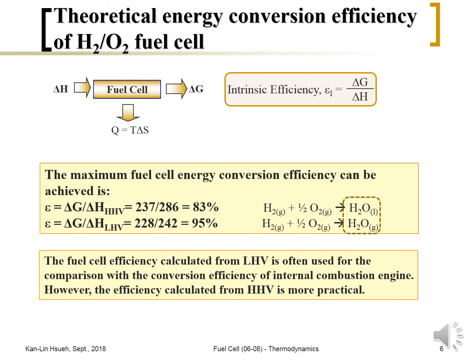However, these figures are only from the ideal thermodynamic point of view. In reality, the energy conversion efficiency is much lower. For a practical hydrogen-air or hydrogen-oxygen fuel cell, the energy conversion efficiency is about 50% — much lower than 83% or 95% — because of additional efficiency losses such as reaction kinetics, internal resistance, overpotential, and other factors that reduce electricity output and convert more energy into heat. These are related to reaction kinetics, which will be covered in the next unit.